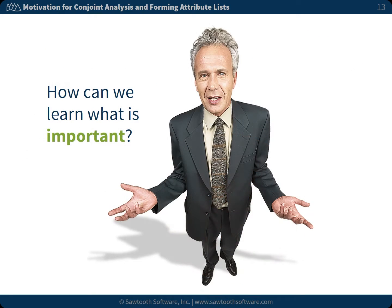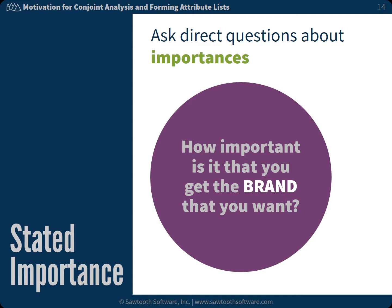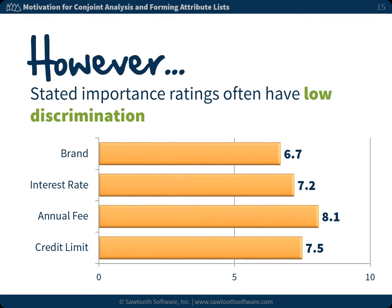Respondents will almost always prefer lower fees to higher fees or higher credit limits to lower credit limits. So, how do we learn what is important? We might think about asking direct questions such as how important is it that you get the brand, the interest rate, the annual fee, or the credit limit that you want? We call these stated importance questions. Stated importance ratings often have low discrimination, with most answers falling in very important categories, as seen on the following chart of average importance ratings on a 10-point scale. These answers are sometimes useful for segmenting the market, but are still not as actionable as they could be.